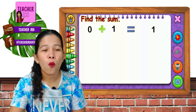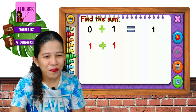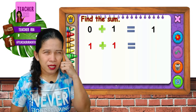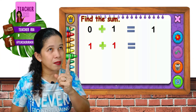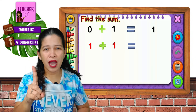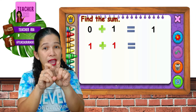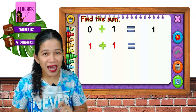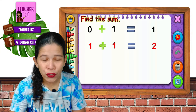Next: one plus one equals. We can put objects in our mind, like one apple plus one apple, or use our fingers — one plus one, put them together, you would say one, two. So the answer is two.